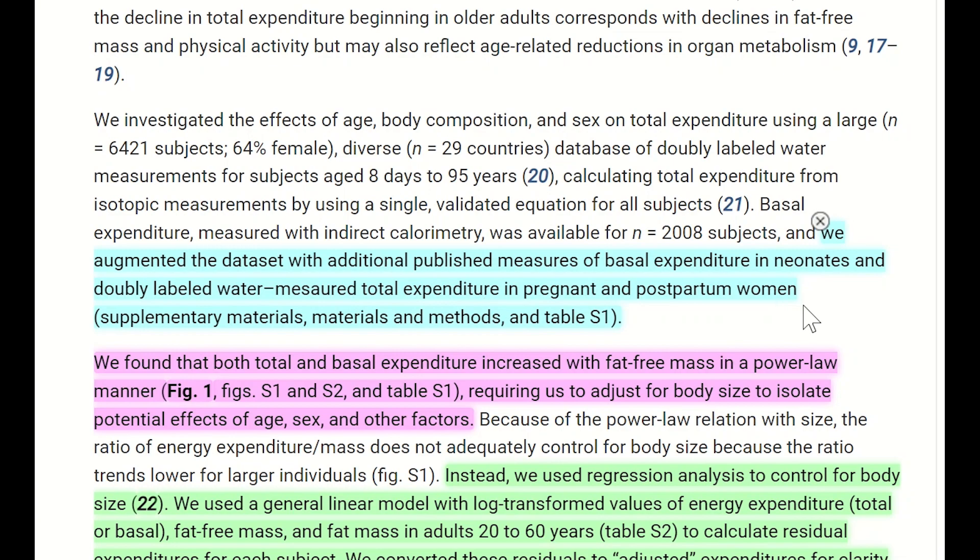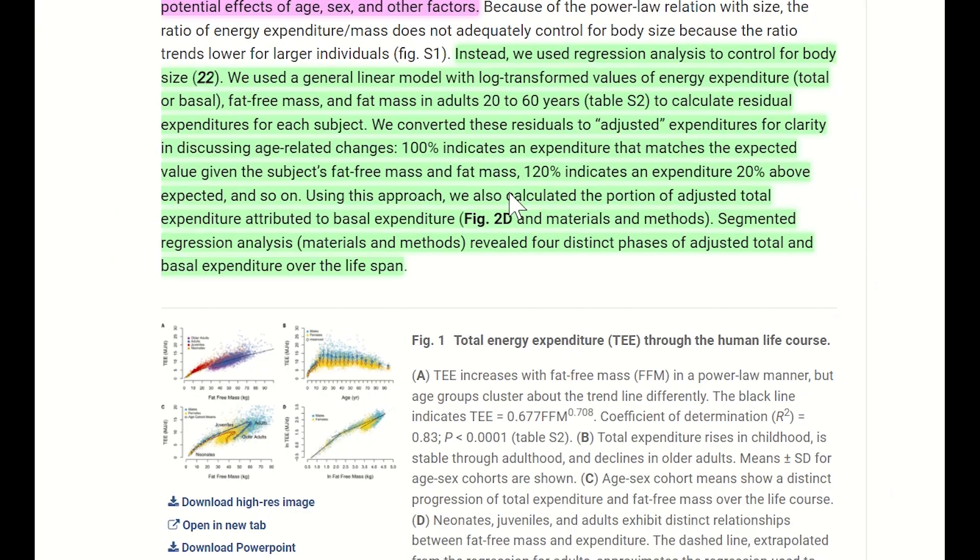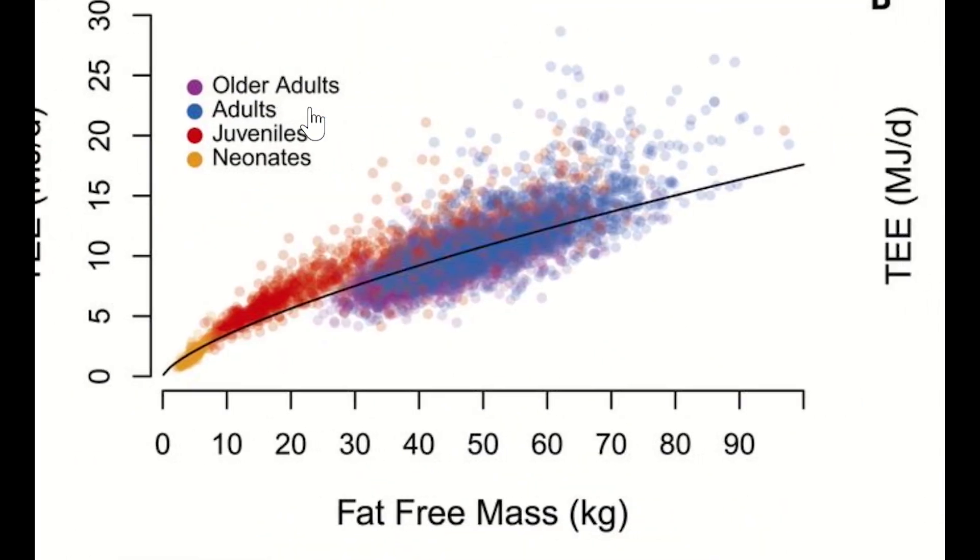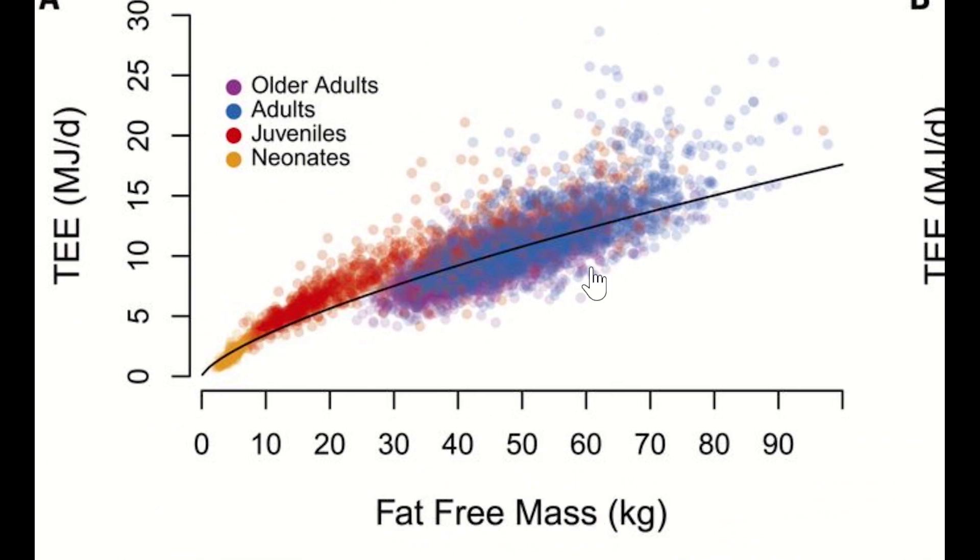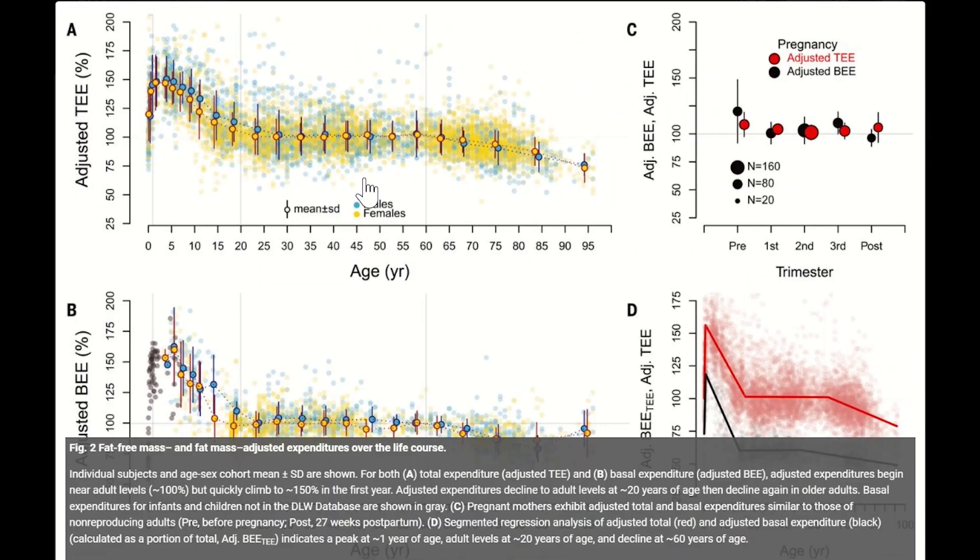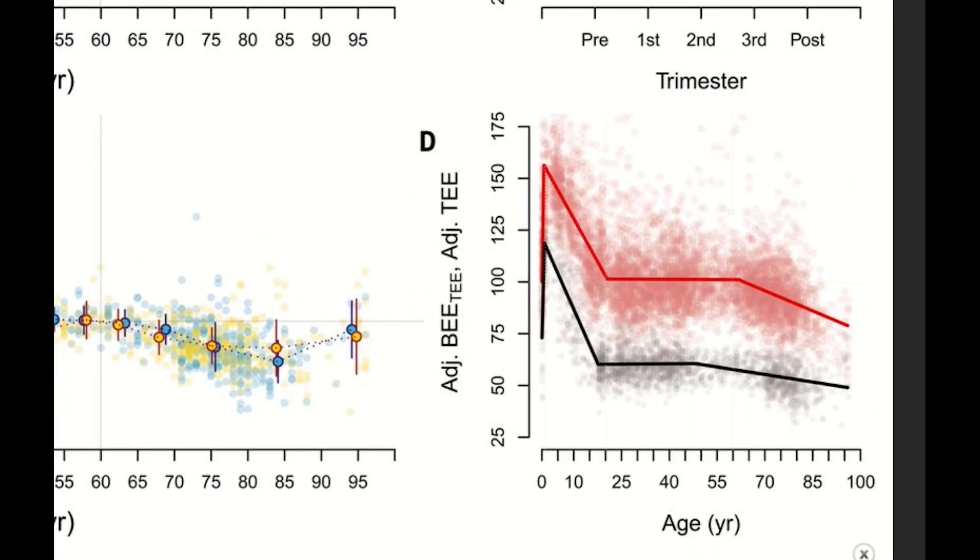And so once they had these measurements, they first needed to account for differences in body size by adjusting for fat free mass. And so simply the reason for that is because there's a power law relationship between body size and energy expenditure. And so they adjusted all the measurements, and they plotted them, as you can see in this graph here, across all the different ages that they had. So this figure is simply just showing the adjusted total energy expenditures. And interestingly, you can kind of split this up into four different phases. And while the authors demonstrate this more clearly in their segmented regression analysis, we can see quite clearly three major transition points with four distinct phases.